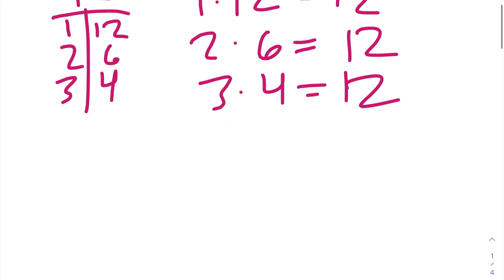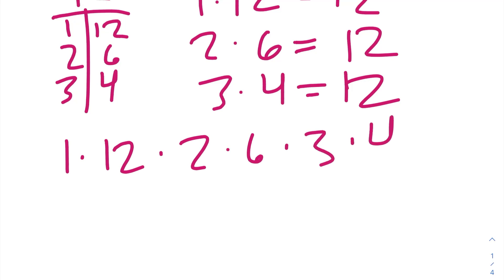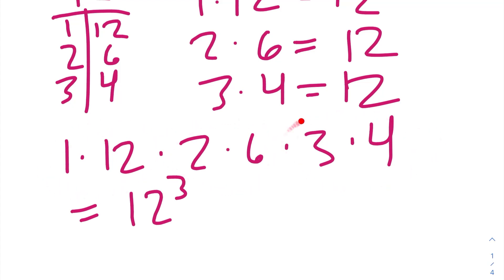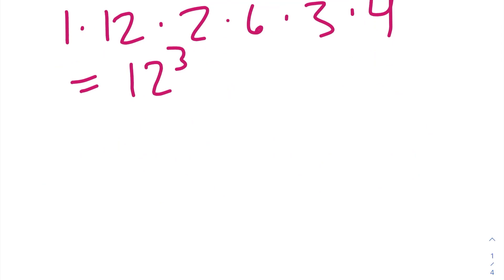So the product of the factors of 12 is 1 times 12 times 2 times 6 times 3 times 4, which is the same as 12 to the power of 3, because each factor pair multiplies to 12. 12 to the power of 3 is equal to 1728.